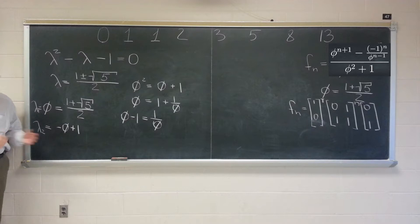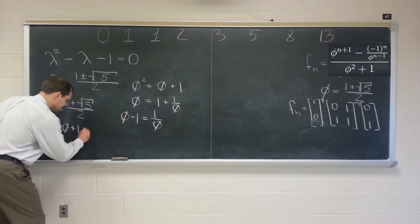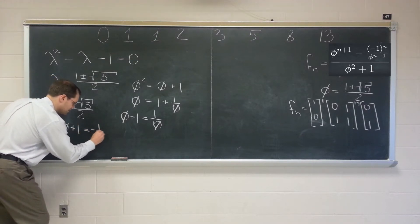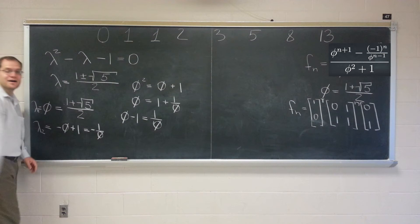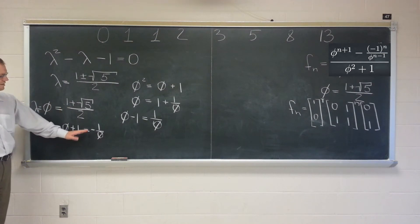And moving the 1 over here, we get phi minus 1 equals 1 over phi. So far so good? So this second eigenvalue is minus 1 over phi.